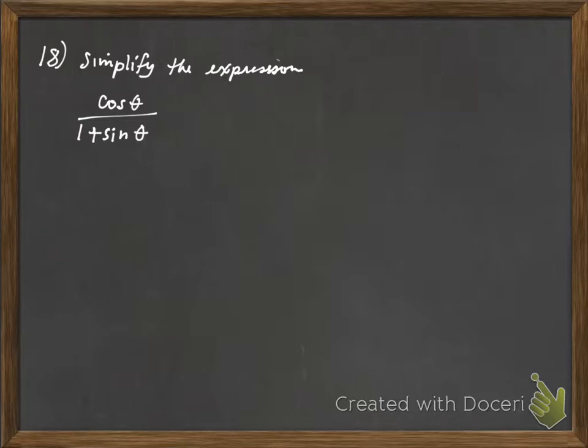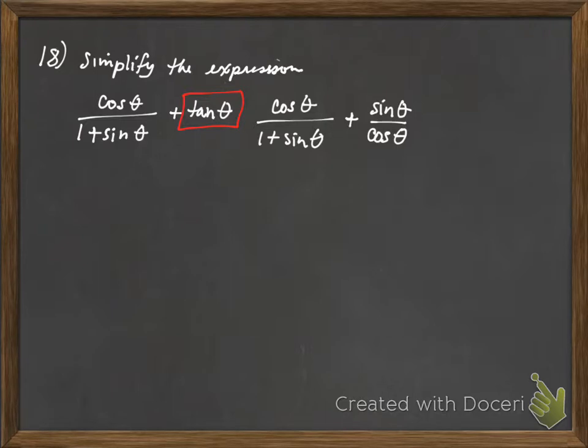Let's go ahead and look at number 18. 18 says to simplify the expression. So if we're going to simplify the expression, I have cosine theta over 1 plus sine theta. Let me go ahead and fix that plus sign there. Plus tangent theta. So the first thing I'm going to do is go ahead and rewrite tangent as sine over cosine. So cosine theta over 1 plus sine theta plus, once again, tangent is sine theta over cosine theta. Now I have to find a least common denominator, which is cosine theta times 1 plus sine theta.